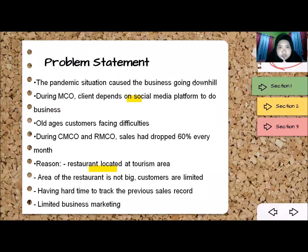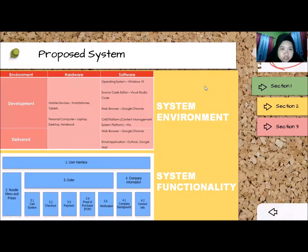The pandemic situation caused the business to go downhill during MCO, as the client depends on social media platforms to do business. All age groups of customers faced difficulties. During MCO and RMCO, sales had dropped 60% every month. This project aims to develop a web-based business for Alumnodal Corner by developing an online ordering system web application. The system will be used by customers and administrators, which is our client.